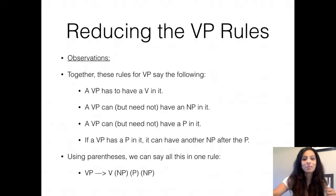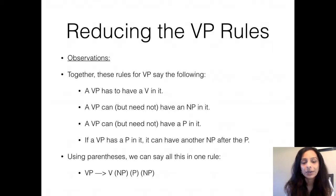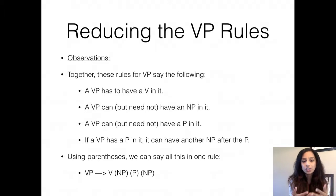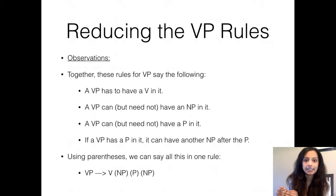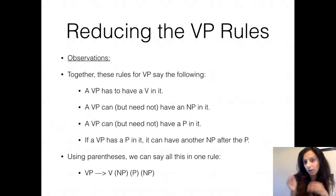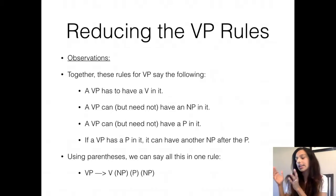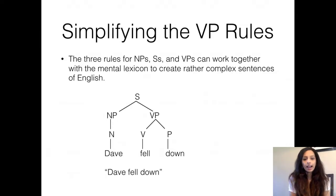Obviously we want to reduce all the VP rules into one rule. Just like we did for noun phrases, we are going to use the parenthetical notation to introduce optionality in the VP rule. We take the most complete VP rule — VP goes to a verb, a noun phrase, a P, and an NP — and introduce optionality. The V is always obligatory. Then you can have an optional NP in parentheses, an optional P in parentheses, and another optional NP in parentheses. Now we can create complex tree structures with it.